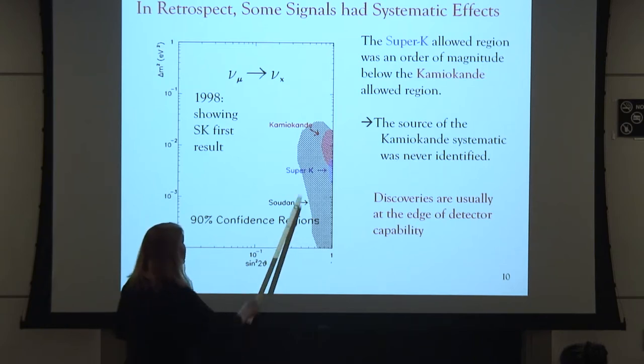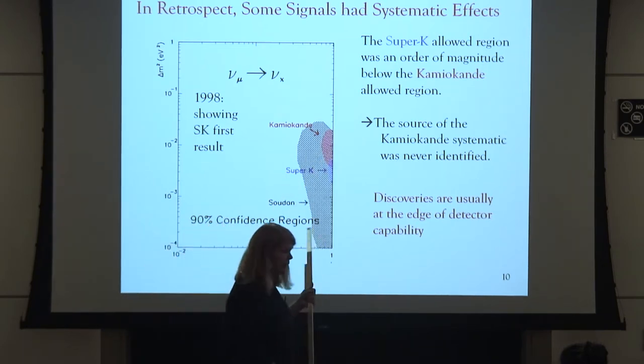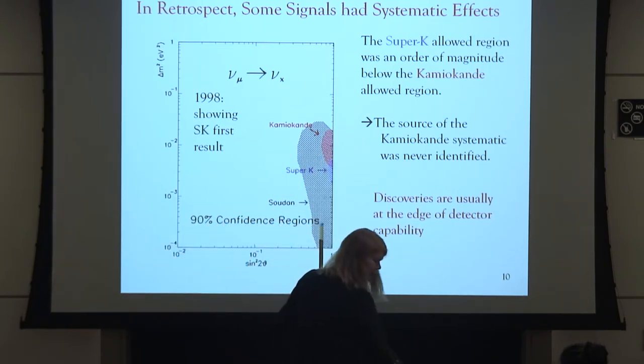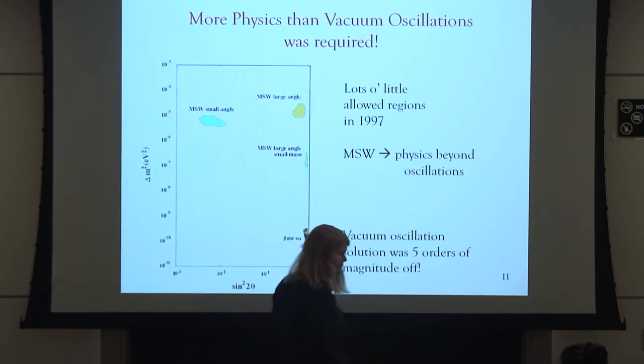In retrospect, some signals did have systematic effects. When the Super-K results first came out, it was a real shock that the Kamiokande results had been sitting much higher. In fact, the MINOS experiment and the experiments from CERN to Gran Sasso were all designed with the right L over E to explore the Kamiokande region. The Super-K result came out a factor of five or more lower in delta M squared, and there must have been some source of systematic effect in Kamiokande — it was a much smaller detector, so harder to contain events.